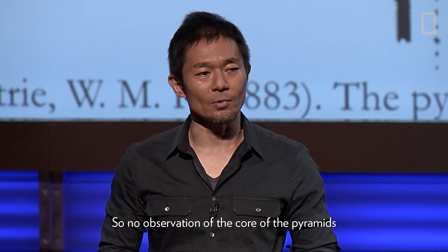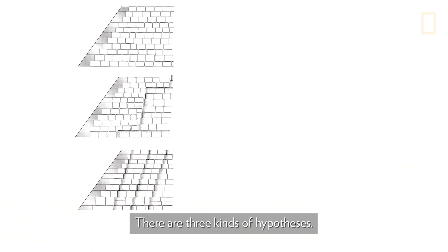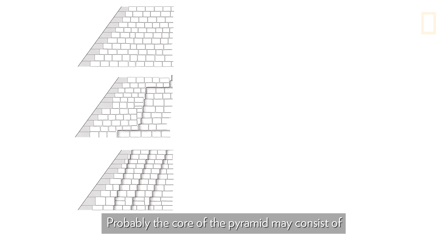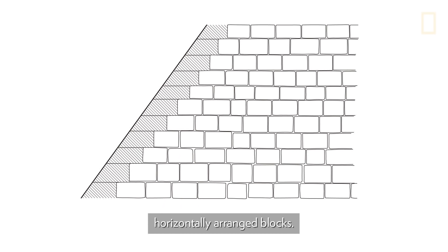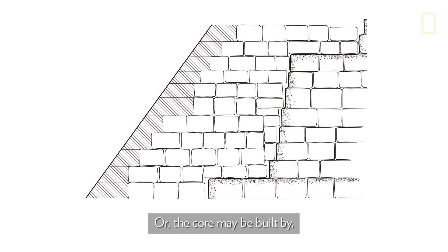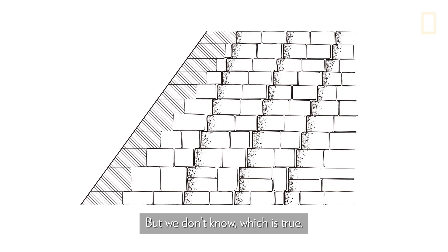Surprisingly, no observation of the core of the pyramid has ever been made. There are three hypotheses: the core may consist of horizontally arranged blocks, some Egyptologists believe it may have a step pyramid structure, or the core may be built by what we call an accretion layer. But we don't know which is true.